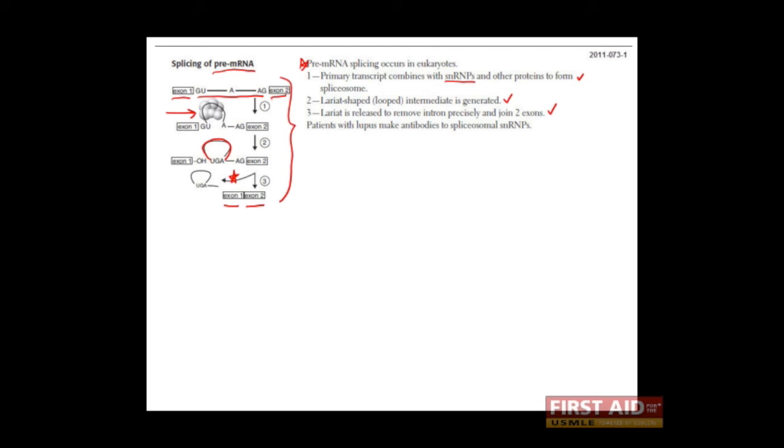Although the mechanistic steps are not terribly important for the USMLE Step 1, you should be familiar with this concept. Also realize that patients with lupus, for some reason, make antibodies against the splicesomal complex.